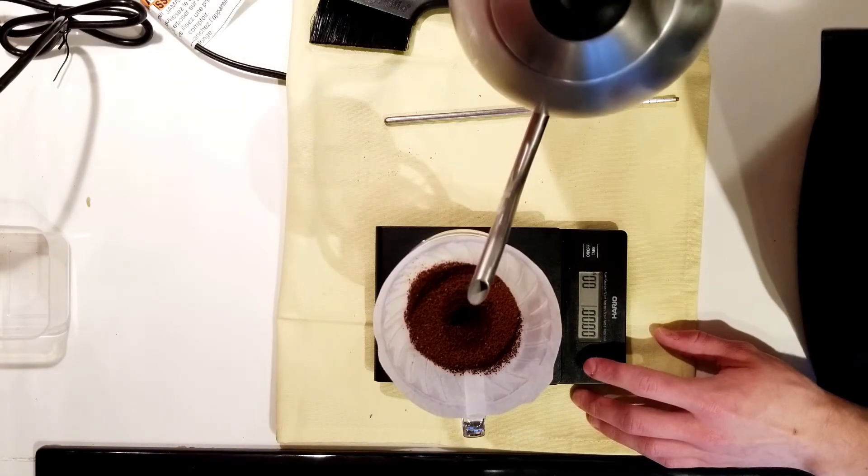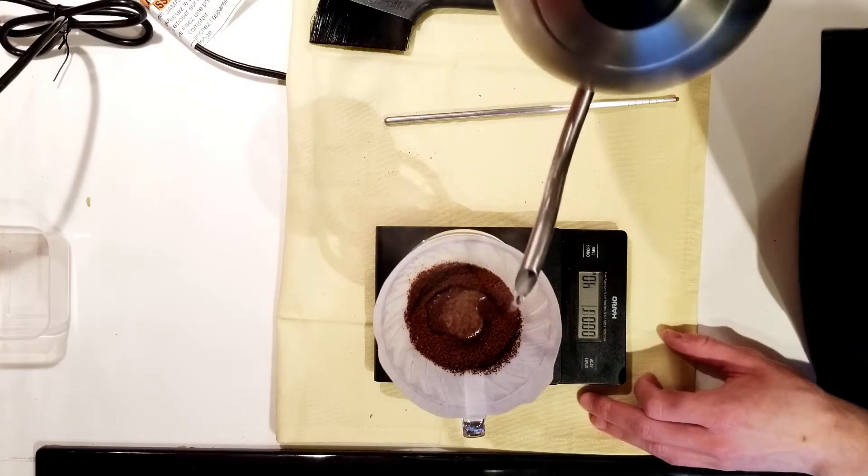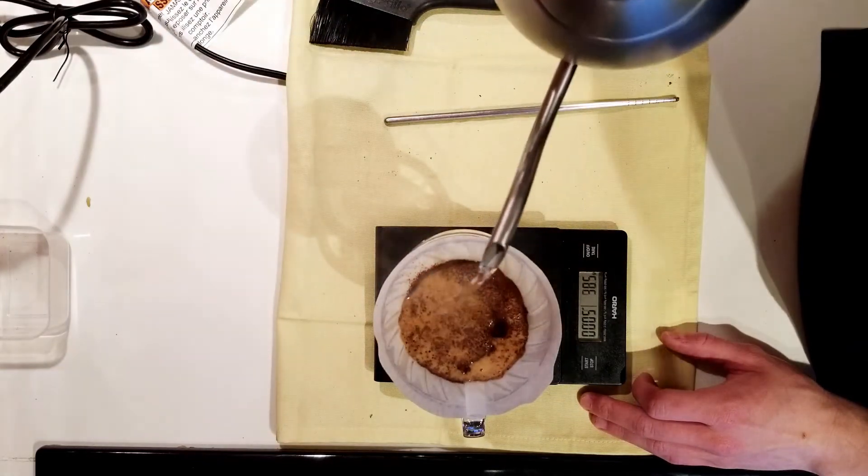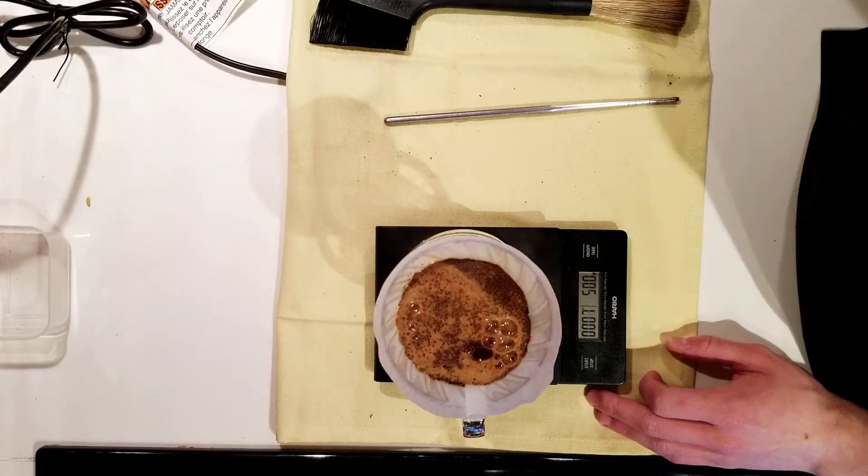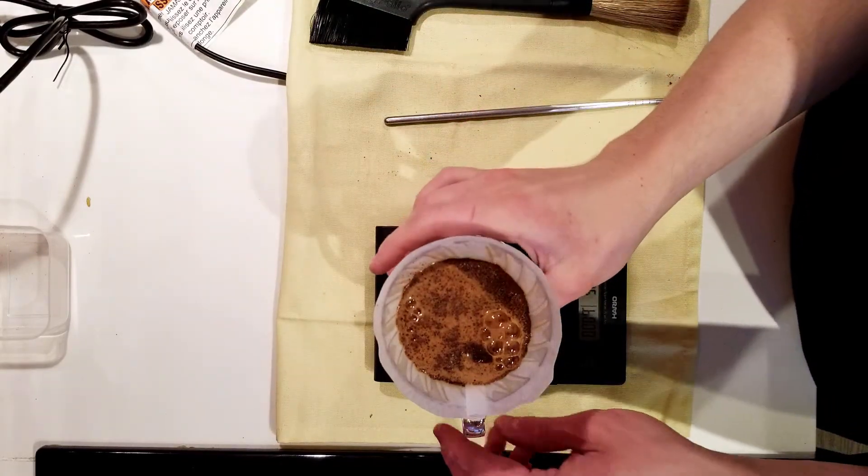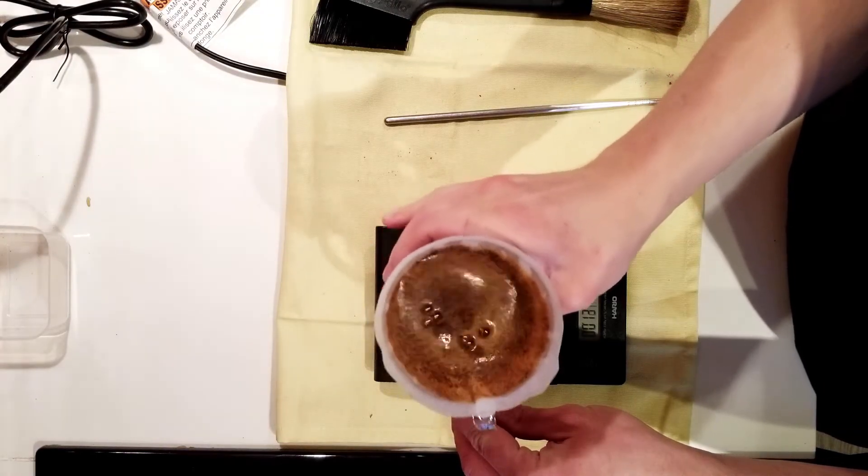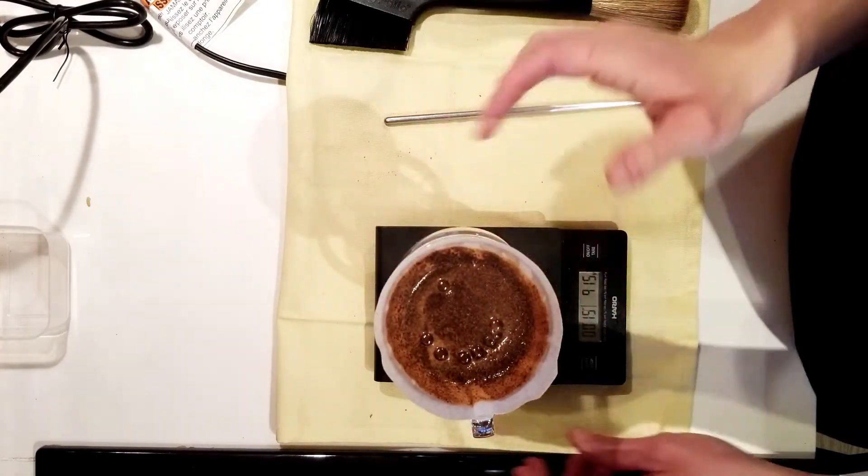We now want to add about two to three times the amount of water as you started with in ground coffee. For me, that's typically around 50 grams. Then I swirl the V60 for a few seconds because as I said, we are trying to evenly saturate all the coffee as quickly as possible.